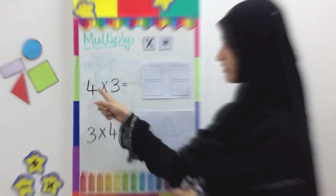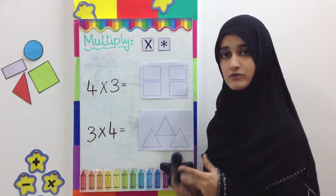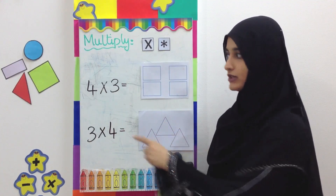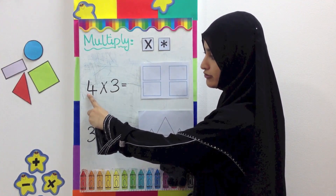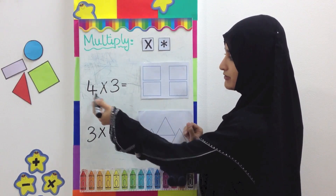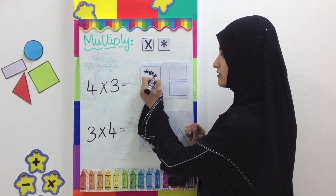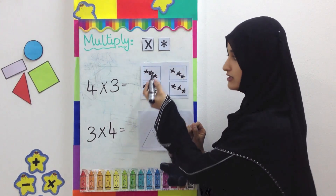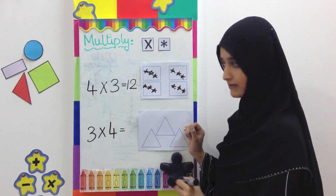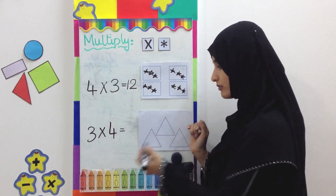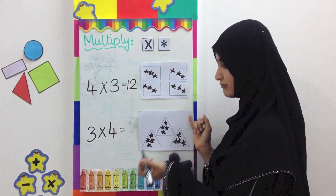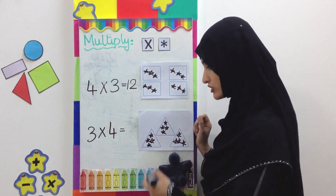Here we have four threes. The numbers we are multiplying have changed positions. The first number is four, so we make four sets, and in each set we draw three stars. Skip counting in three: three, six, nine, twelve. For the question three times four, we have three sets and in each set we draw four stars. This shows that if you change the positions of the numbers you are multiplying, the answer does not change — it remains twelve in both cases.